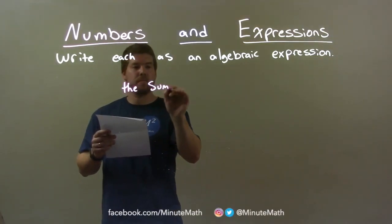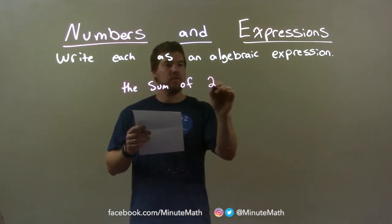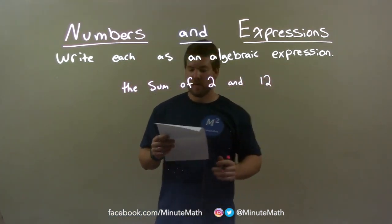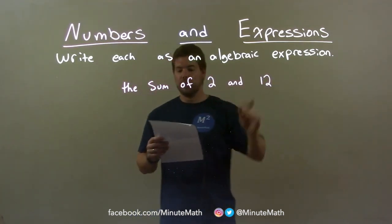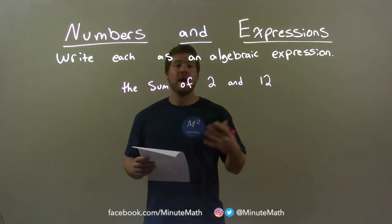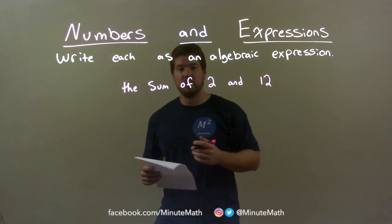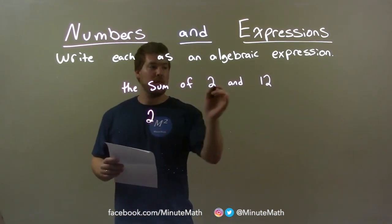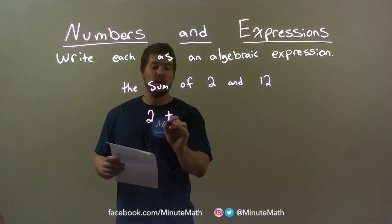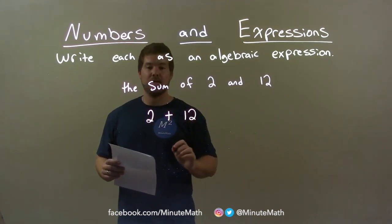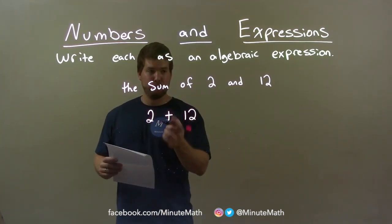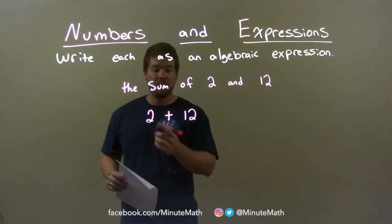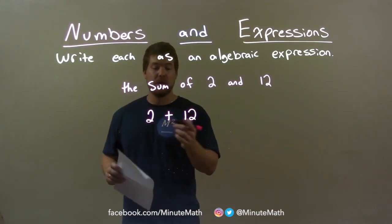The sum of 2 and 12. So we have the sum of 2 and 12. If I want to combine that together, the sum is going to be addition. So we're going to add them together — we start with the 2, that was where it was first, then we have 12 second. So our final answer: 2 plus 12.